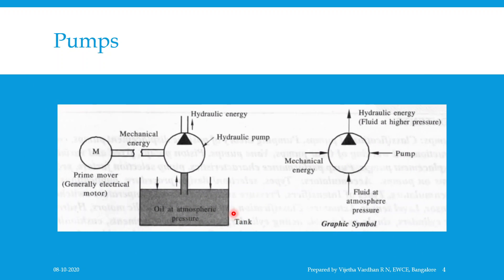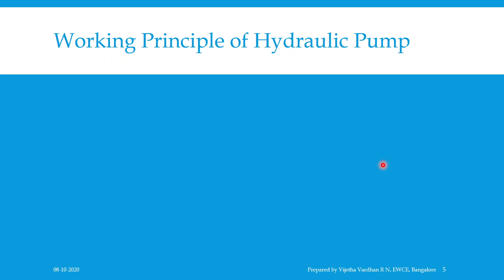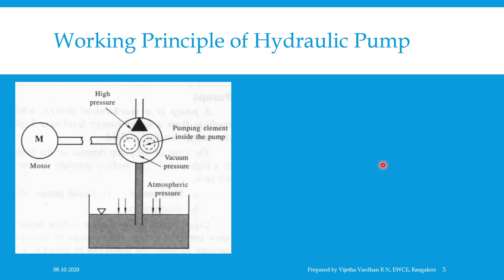The hydraulic pump is a source of hydraulic power. It imparts hydraulic energy to the oil, as you can see in the figure. This figure shows the pump as a source of hydraulic energy and also shows its graphical symbolic representation. Now let us understand how a hydraulic pump works — that is, the working principle of a pump — using a simple figure or sketch to explain it.